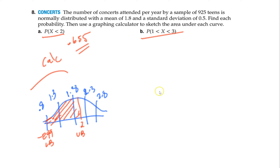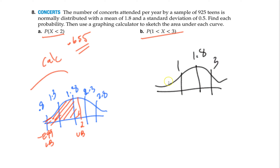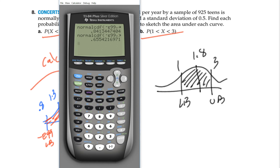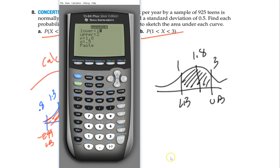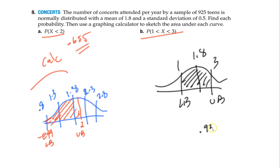Part B: the probability of being between 1 and 3 concerts. My mean is 1.8, with 1 to the left and 3 to the right. Again, these don't fall exactly on standard deviation marks, so use the calculator. Lower bound is 1, upper bound is 3, everything else stays the same. Hit enter, and the probability of being between 1 and 3 concerts per year is about 0.937 — roughly a 94% chance.